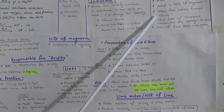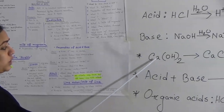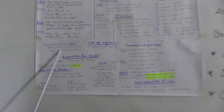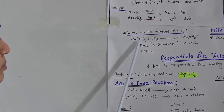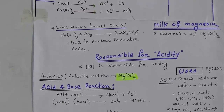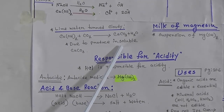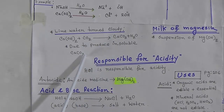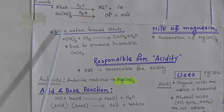Now the next topic is when lime water turns cloudy — very important and very easy. Lime water is the solution of calcium hydroxide. When lime water reacts with carbon dioxide gas, it produces calcium carbonate and water. Carbon dioxide is a gas and it is available in the air. Calcium hydroxide reacts with carbon dioxide and produces insoluble calcium carbonate, which does not dissolve in water. When insoluble calcium carbonate is produced, the whole solution becomes cloudy. That is why, due to the production of insoluble calcium carbonate, lime water turns cloudy.